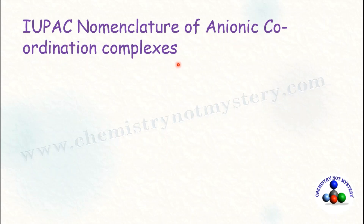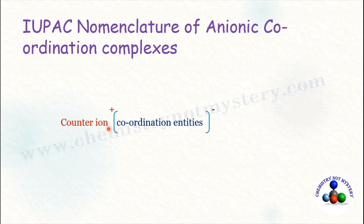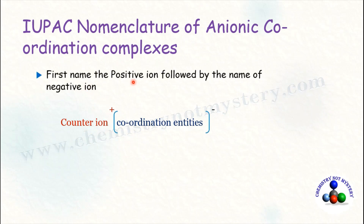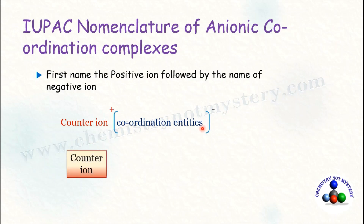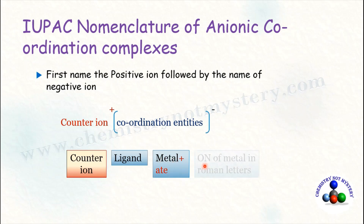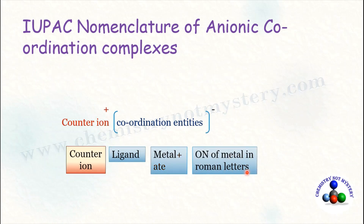Now come to the IUPAC nomenclature of anionic coordination complexes. If the coordination complex is negatively charged, the counter ion is present before the coordination sphere. As per the rule, first write the positive ion followed by the negative ion — so first write the counter ion, then the coordination entity. For the naming of the coordination entity: write the name of the ligand, then the name of the metal ion with the suffix '-ate,' followed by the oxidation number in Roman numerals.